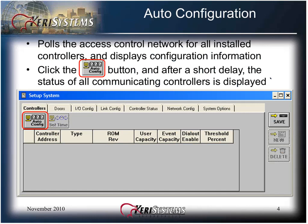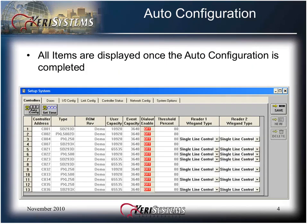The auto configuration operation polls the access control network for all installed controllers and displays their information. Click the Auto Config button and after a short delay the status of all communicating controllers is displayed. For systems that have already been configured, auto configuration does not change any of the program data in the controller — auto config only reports back to the host PC information about the controllers in the field. All items are displayed once the auto configuration is completed.